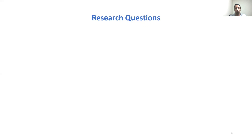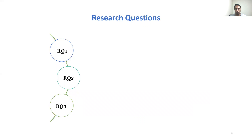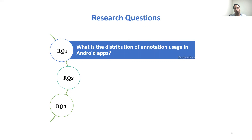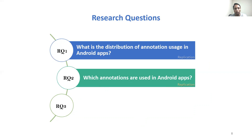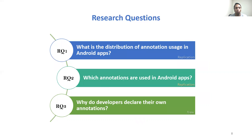To understand annotation uses in Android apps, we investigated three different research questions. First, we investigated the distribution of annotation uses in Android apps, comparing them with general Java applications. Second, we investigated which annotations are used in Android apps, covering different types and their adoption frequency. Finally, we investigated why developers declare their own annotations, examining the purpose of declaring and using custom annotations.